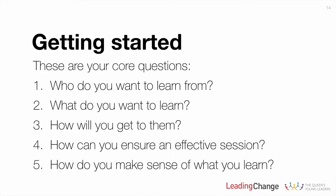A quick note about the process: there's a lot of detail in the book, and I'm not going to replicate the entire book here. What I will touch on is an overview of the process and some important points. The five-step process we're going to go through is: who do you want to learn from, what do you want to learn, how will you get to those people, when you do get to them how can you ensure you have an effective session, and finally, making sense of what you learn or observe.